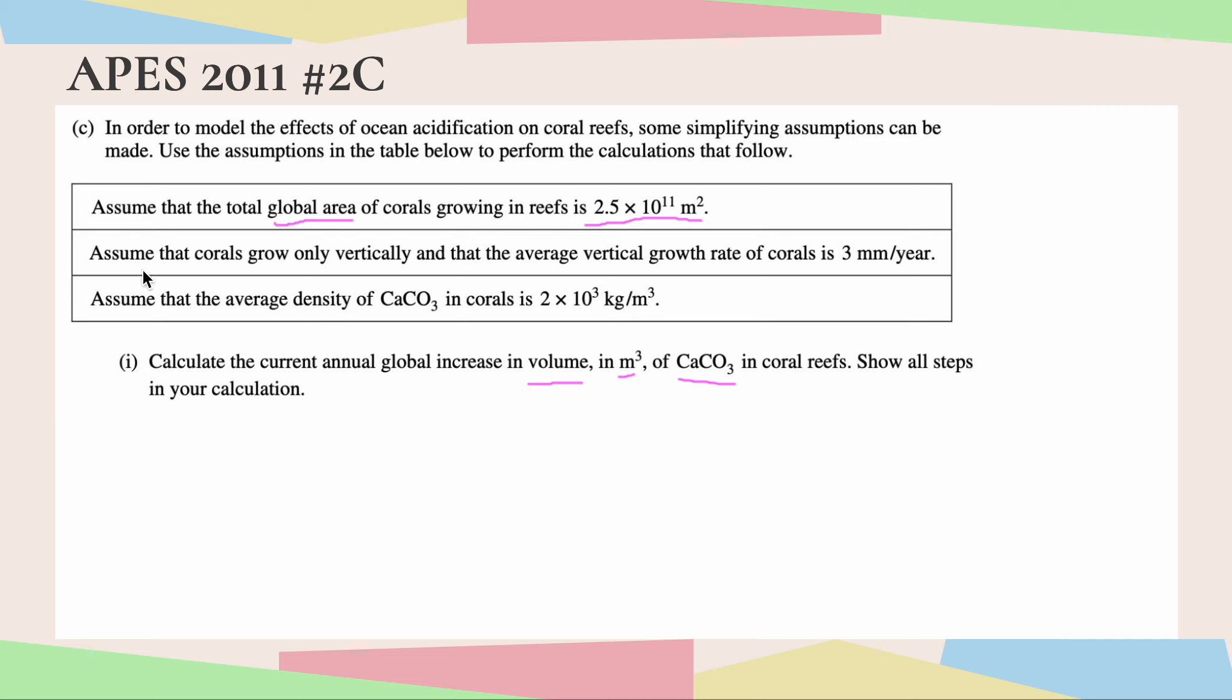Now, if we look at our second given, we know that coral reefs grow only vertically, and that the average vertical growth rate of corals is 3 millimeters per year. So why do we care? What is this telling us? Well, if you think about the volume of really any figure, in order to find it, you take the area of whatever the base shape is, and then you multiply it by the height. So if you think about these two givens here, that's basically what we're given.